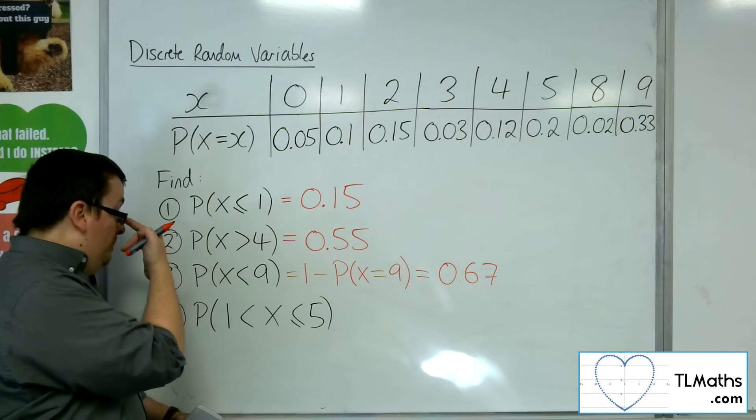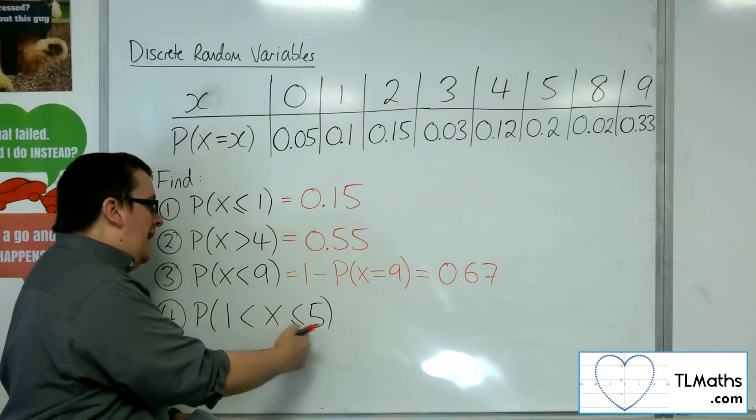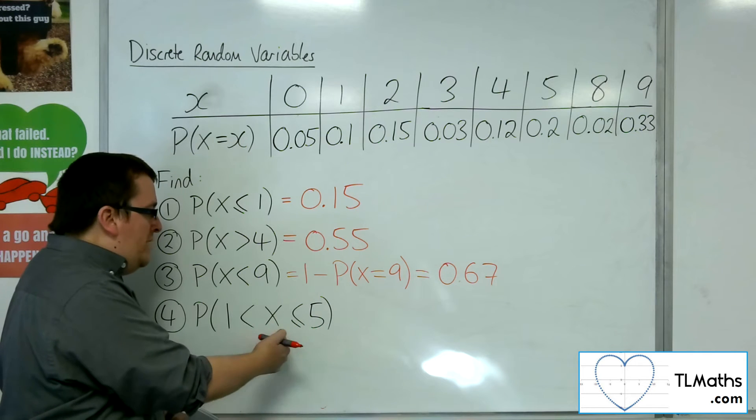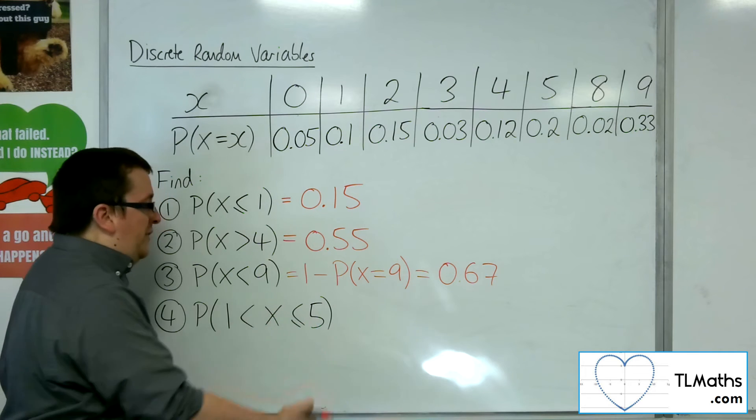Then finally, number 4, the probability of x being greater than 1, but less than or equal to 5. So always read these from the middle outwards. So greater than 1, less than or equal to 5.